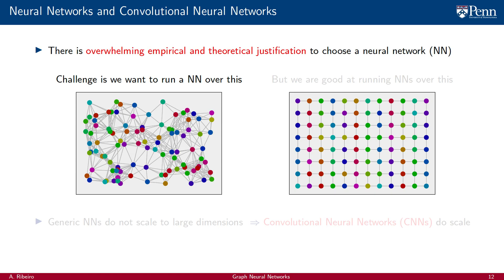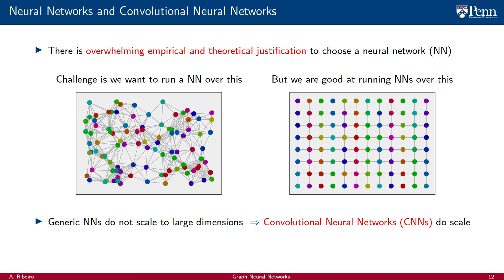That challenge is the fact that we want to run a neural network over a structure like this graph, but we have become good at running neural networks over images that look like this other graph. Generic neural networks, or fully connected neural networks to be more precise, do not scale as we grow the dimensionality of the input signal. If we have a signal made up of a small number of components, a generic neural network suffices. However, if we have a signal with a large number of components — which in the case of graphs means a signal supported on a large graph — a generic neural network will not work.